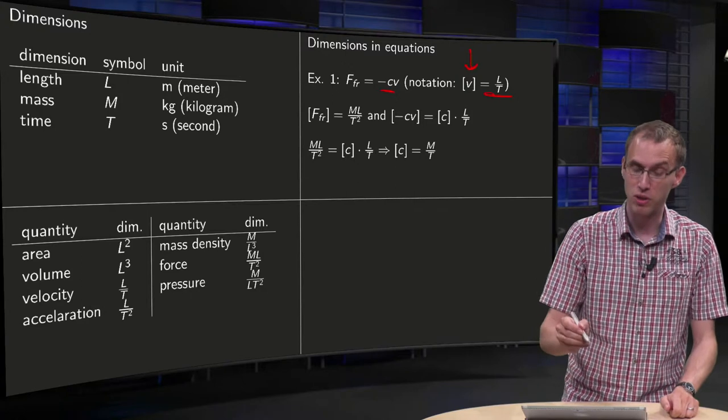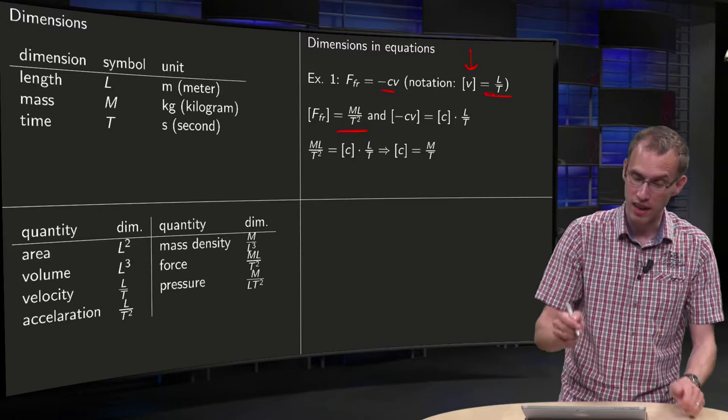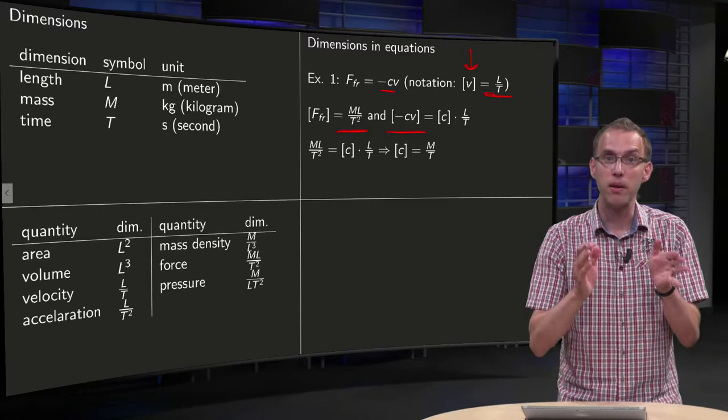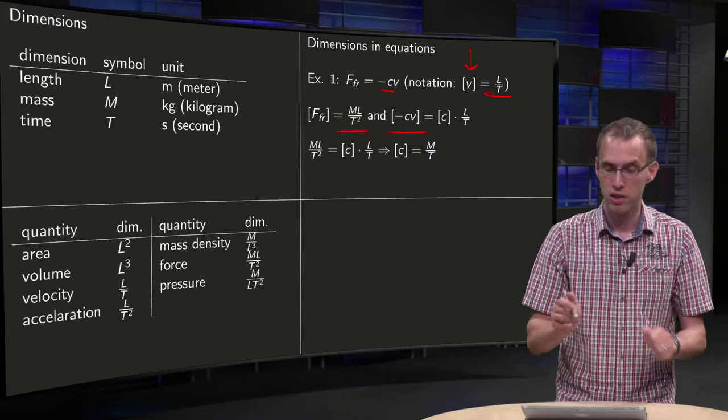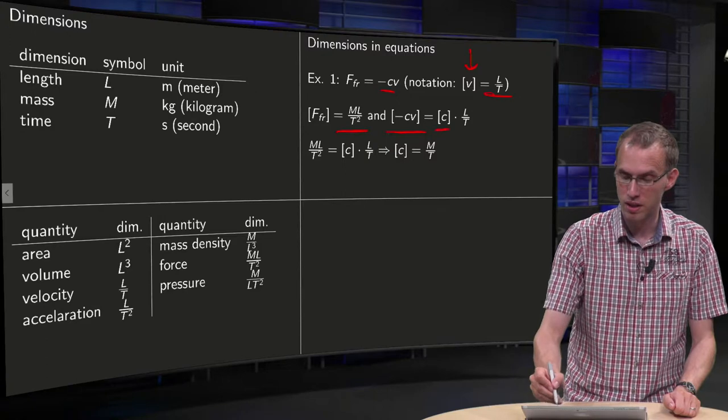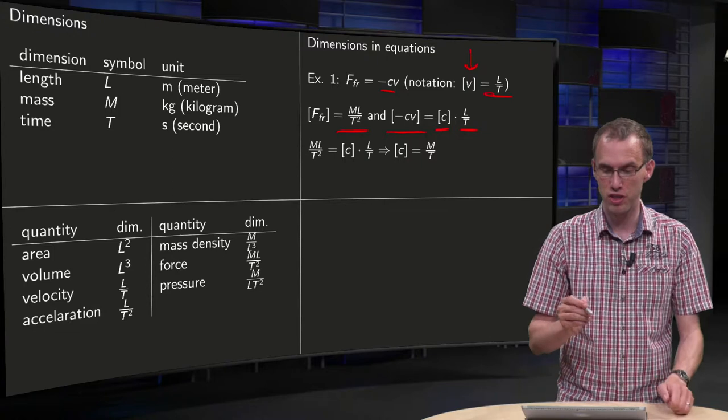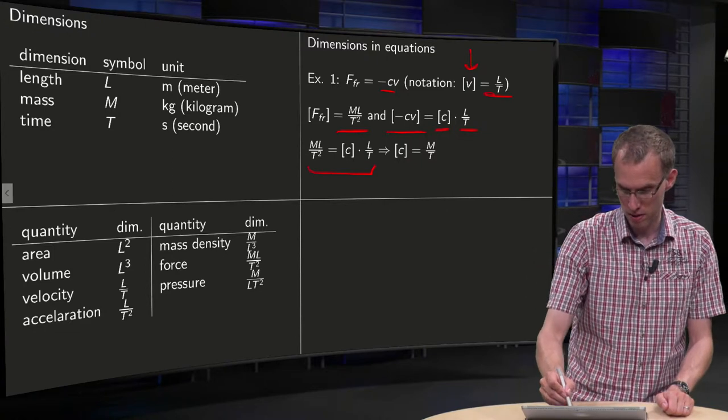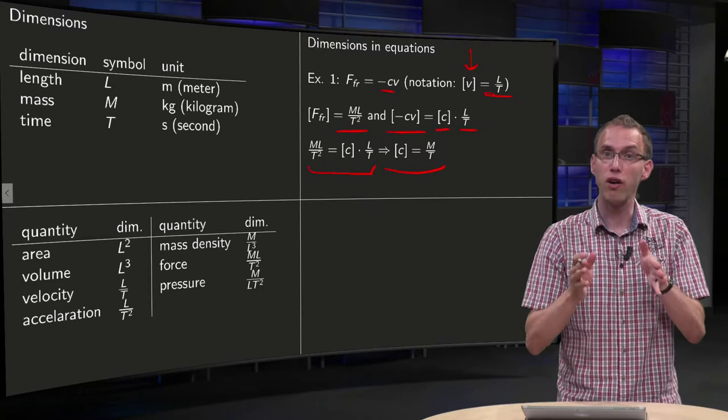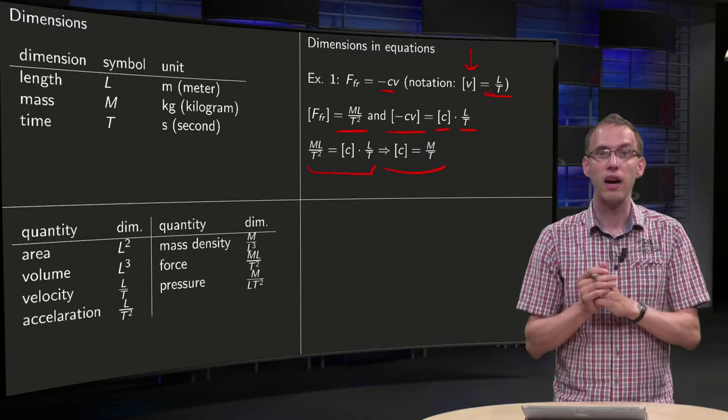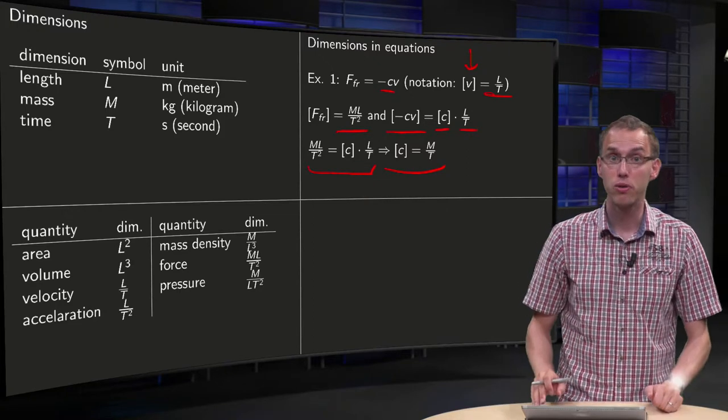Now we can use this to find the dimension of C. We have the dimension of the left hand side, which is a force, so it is ML over T squared, and on the right hand side, dimension of minus C times V. The dimension of a number that is dimensionless, so the minus 1, we don't have a dimension there, so this becomes the dimension of C times the dimension of V. So we can solve for the dimension of C by solving this equation, and you see that the dimension of C equals mass over time. So in this way you can always figure out what the dimensions of all your constants should be.